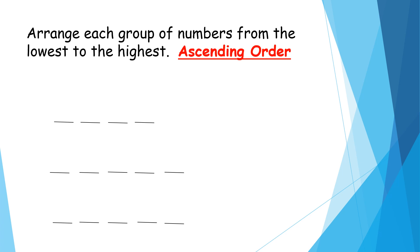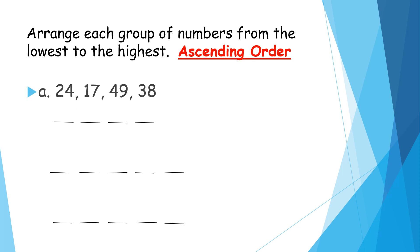Now it's time to put it into practice, arranging the numbers in ascending order or descending order. Let's start with ascending order. Arrange each group of numbers from the lowest to the highest. Now get your notebooks and write these exercises in the right space of your notebook. Exercise A: number 24, number 17, number 49, number 38. Write your answer below.